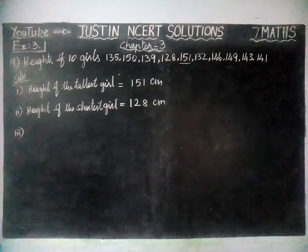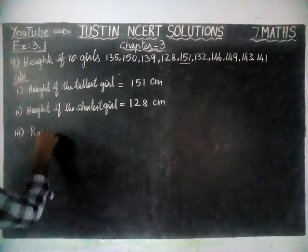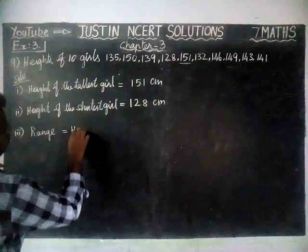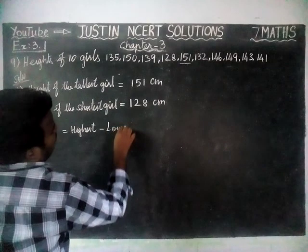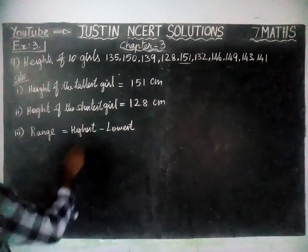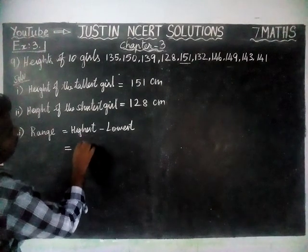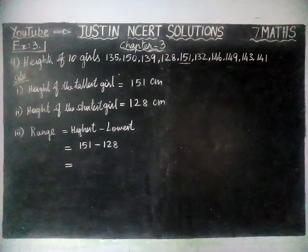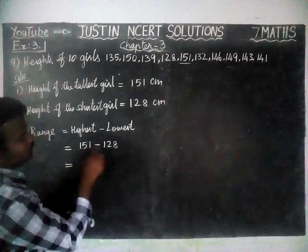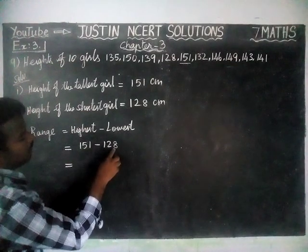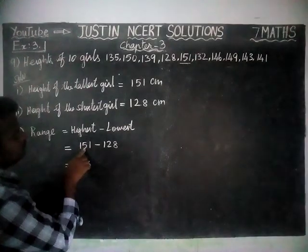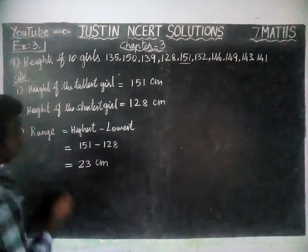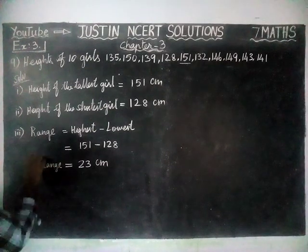Now we are going to find the range of the data. Range is equal to highest minus lowest. Here the highest value is the tallest girl's height minus the shortest girl's height, which is 151 minus 128. We subtract: 11 minus 8 is 3, then 4 minus 2 is 2. So the range is 23 centimeter.